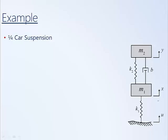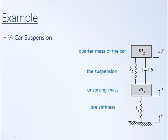This diagram over here is a representation of a car suspension. M2 is one-quarter of the total mass of the car — the sprung mass, the mass supported by the suspension. The suspension is modeled as having some damping B and some stiffness represented by the spring constant K2. M1 is the unsprung mass — essentially the mass of the wheel. The tire is modeled as having stiffness K1 with negligible damping.